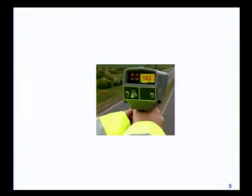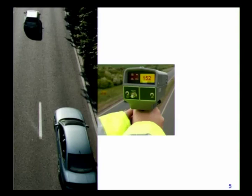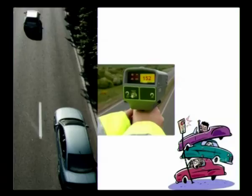A traffic officer records the speed of 152 kilometers per hour in his speed gun and is looking at the speeds of two cars on a road. What is important is that if the vehicle is moving at a constant speed — say 152 kilometers per hour using cruise control — with no acceleration and no change of direction, it maintains uniform speed with respect to the traffic officer.